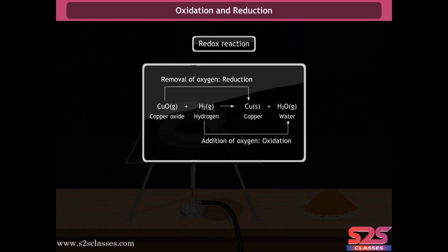Oxidation and reduction occurring simultaneously is known as a redox reaction — 'red' for reduction and 'ox' for oxidation. Substances that are reduced, providing oxygen or removing hydrogen, are called oxidizing agents. Substances that are oxidized, removing oxygen or providing hydrogen, are called reducing agents. In the copper oxide and hydrogen reaction, copper oxide is the oxidizing agent and H2 is the reducing agent.